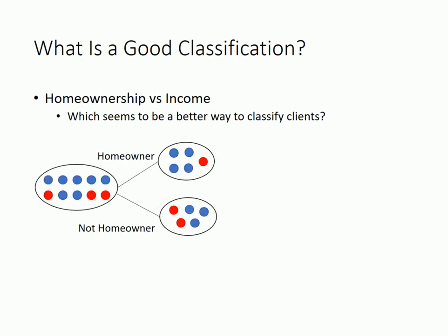Let's first classify the data by home ownership. Each dot represents a client — blue dots are clients that do not default, and red dots are those who default. There are two outcomes for this classification: a client is either a homeowner or not a homeowner. We call the possible outcomes from a classification 'splits.' There are two splits when we classify clients by home ownership: five homeowners and five non-homeowners. Among the five homeowners, only one defaults, while two of the non-homeowners default.